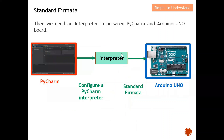So what can we do? We can put an interpreter in between PyCharm and the Arduino Uno board. When PyCharm sends a message, it goes to the interpreter, which understands PyCharm language and converts it into Arduino language. That converted instruction is then sent to the Arduino Uno board and executed correctly. If there is a return message from the Arduino board back to PyCharm, it also goes through the interpreter, which converts it back to PyCharm language.